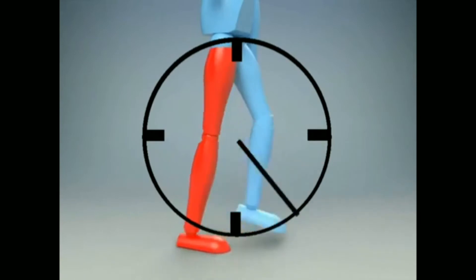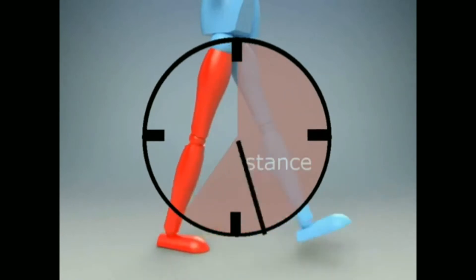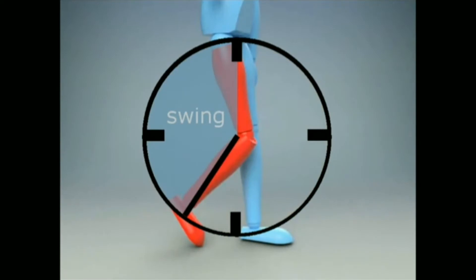The gait cycle is separated into two main sections. Stance is when the reference limb is on the ground and takes up about 60 percent of the gait cycle. Swing is the remaining 40 percent of the gait cycle when the reference limb is in the air.